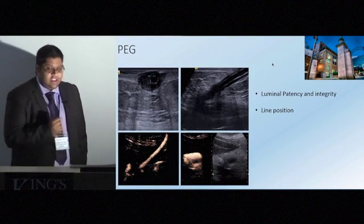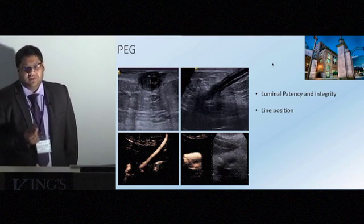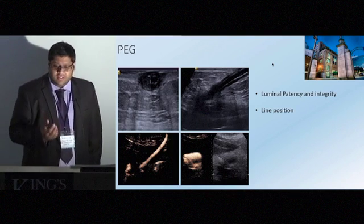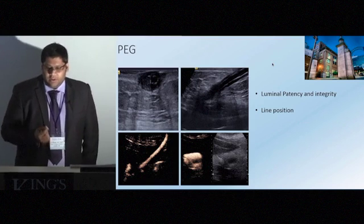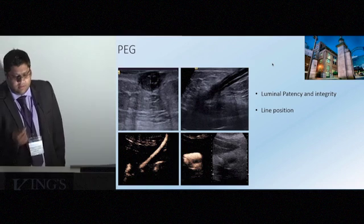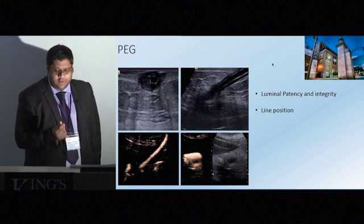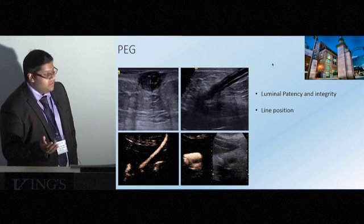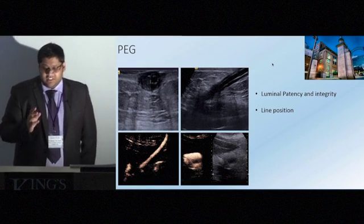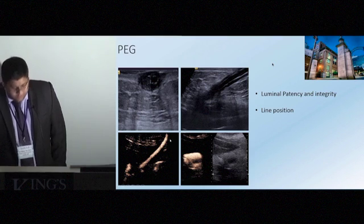Another patient had a gastrostomy tube in situ and came complaining of pain. The team were concerned the gastrostomy was misplaced, but she was unable to move to a fluoroscopy bed. On ultrasound we could see a small collection surrounding the gastrostomy tube, but we needed dynamic imaging to know if it was leaking. We injected contrast through the tube and could see clear opacification of the gastrostomy and filling of the stomach, and definitively no filling of the surrounding collection — confirming no leak.